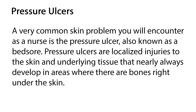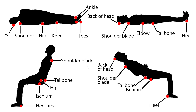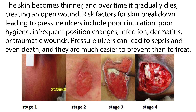A very common skin problem you will encounter as a nurse is the pressure ulcer, also known as a bed sore. Pressure ulcers are localized injuries to the skin and underlying tissue that nearly always develop in areas where there are bones right under the skin, including the heels, ankles, tailbone, hips, elbows, shoulder blades, ears, and back of the head. If body weight continually puts pressure on areas where a person is sitting or lying for a long time, not enough blood can get through to provide oxygen and nutrients, the skin becomes thinner, and over time it gradually dies, creating an open wound. Risk factors include poor circulation, poor hygiene, infrequent position changes, infection, dermatitis, or traumatic wounds.